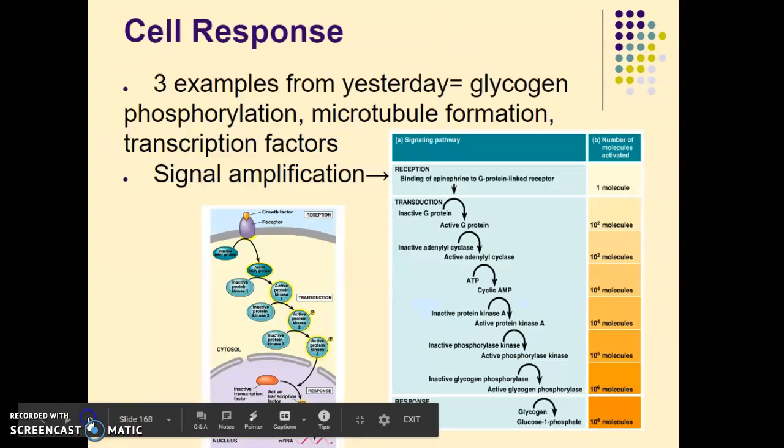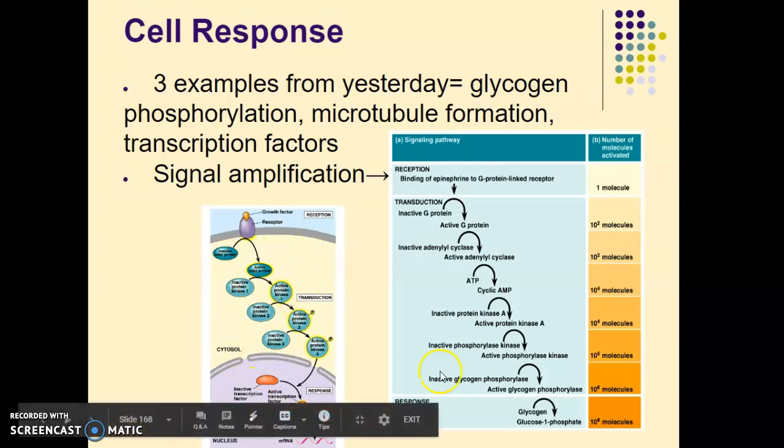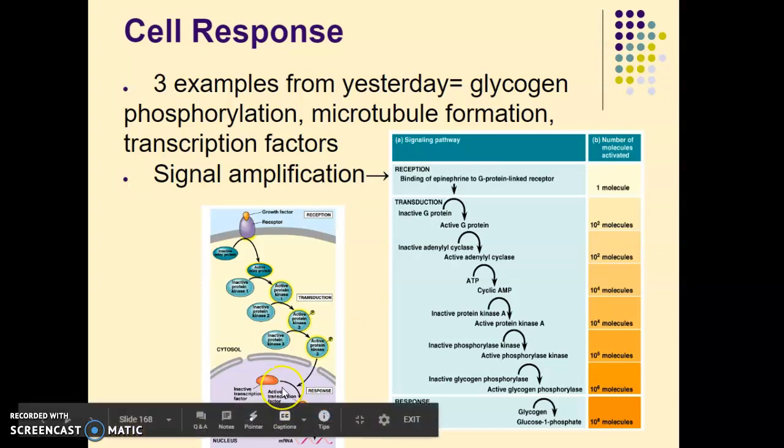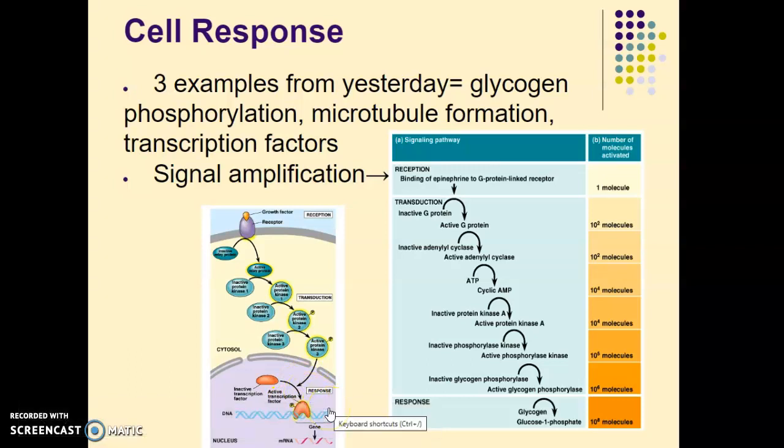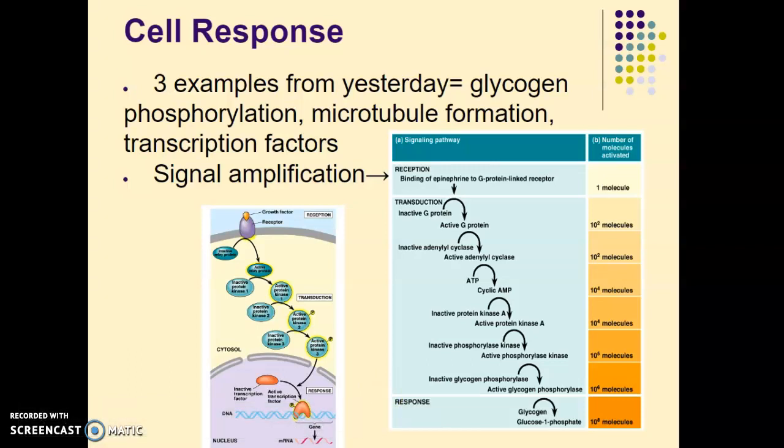So then we get to the response. The response can either happen in the nucleus or it can happen in the cytoplasm. So if it happens in the nucleus, we call that a nuclear response. And usually that would be like the regulation of protein synthesis, right? Because if we're going into the nucleus, we're oftentimes binding to the DNA and then we're wanting to transcribe the DNA into mRNA and then eventually we want to translate that into a protein. So usually the nuclear response is something to do with protein synthesis.